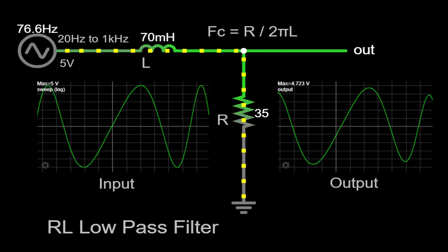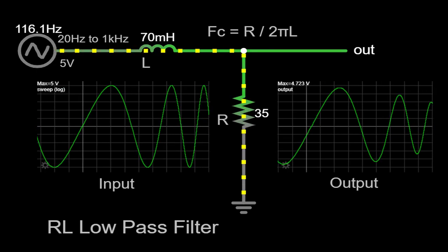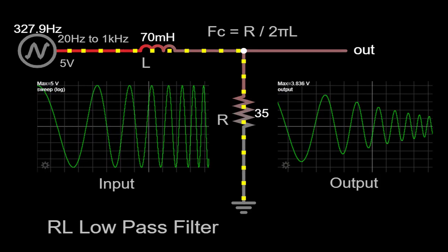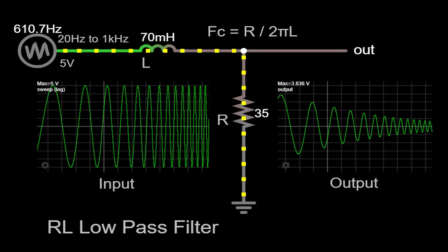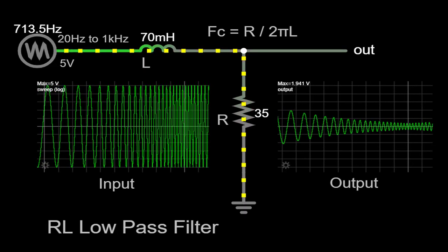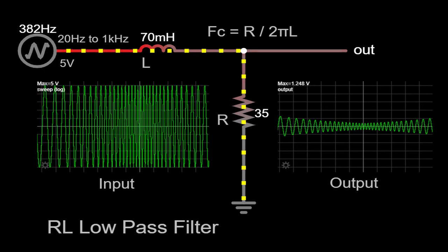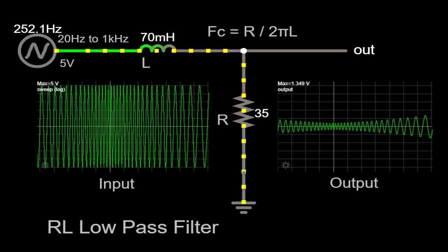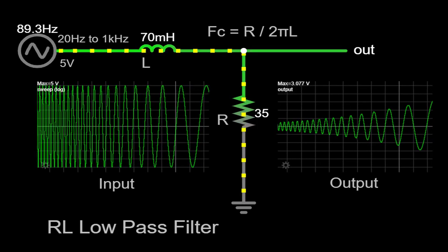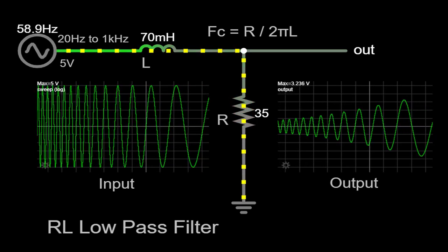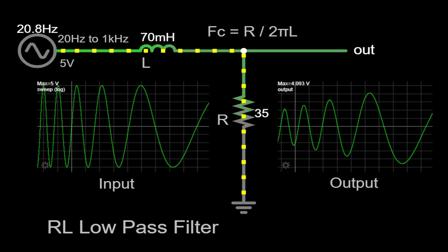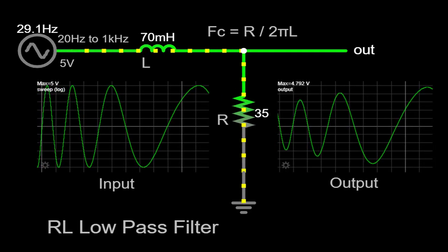And there you have it. We've explored the RL low-pass filter, passive, using a circuit simulator, focusing on its frequency response characteristics, including the concept of the cutoff frequency. By understanding the cutoff frequency, we can determine the range of frequencies that the RL low-pass filter allows to pass through with minimal attenuation. I hope this video has provided a clear understanding of the basic principles behind the RL low-pass filter. If you have any questions or need further clarification, please feel free to ask. Thank you for watching.